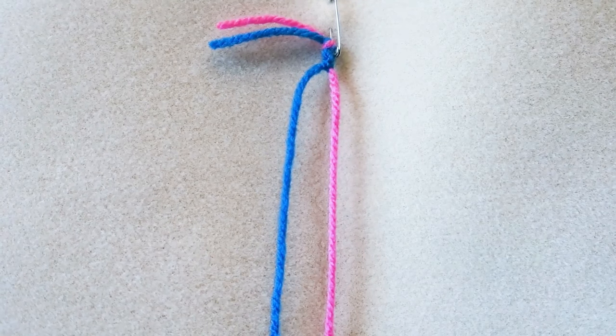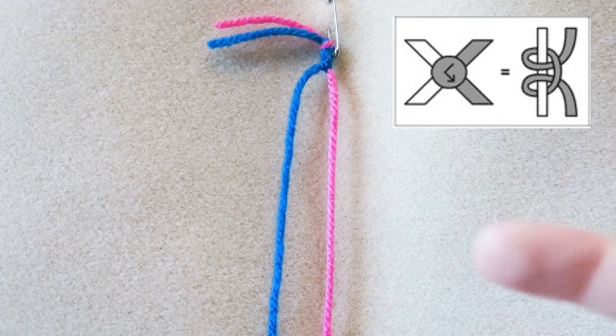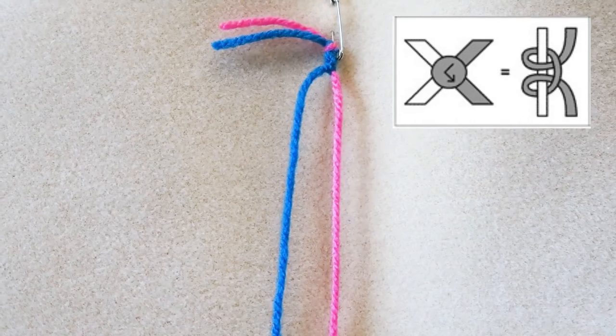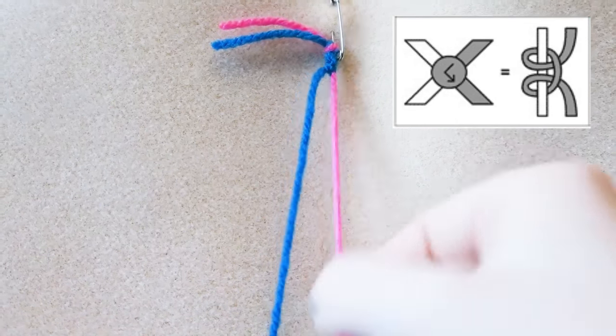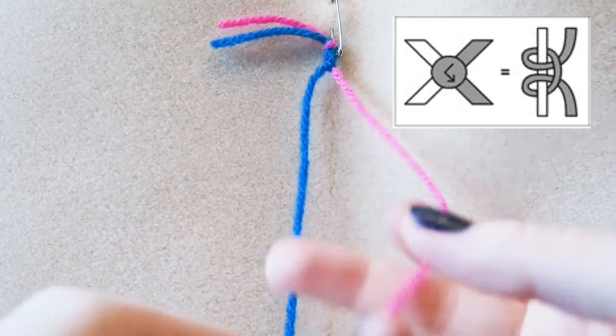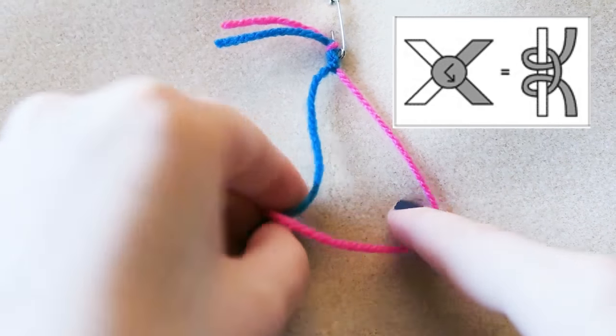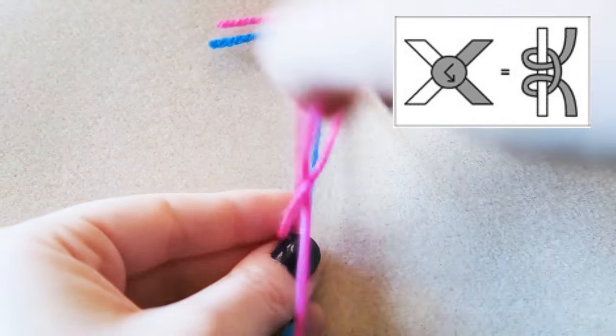The next knot I'm going to show you how to do is the backwards-forwards knot, and that knot is done so the thread stays on the side that it started on. So this time I'm going to take the pink. We're going to start out by doing a backwards knot, making our backwards four shape, wrapping the thread around, so wrapping the pink around the blue and pull up.